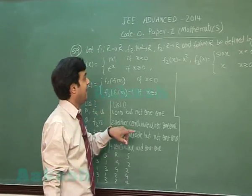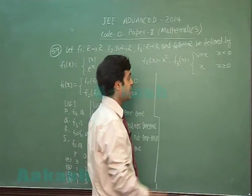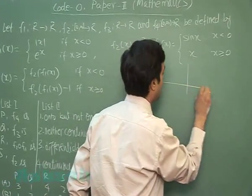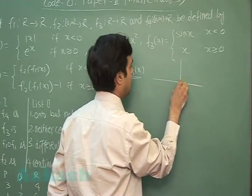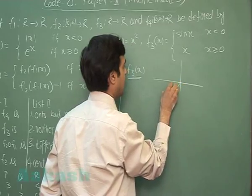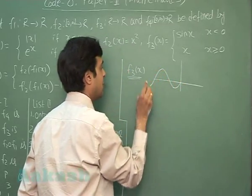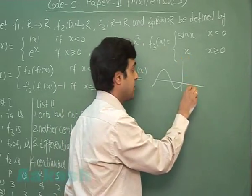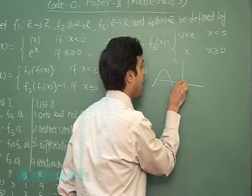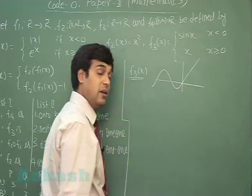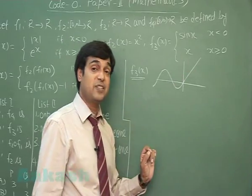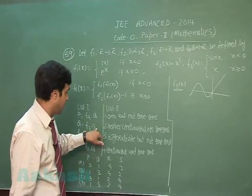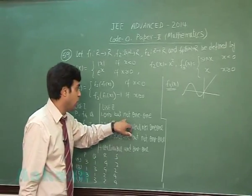Now f4 is a composite one. If I talk about f3 first, that is option Q. f3 is sin x and x, so f3(x) can be traced as sin x when x is less than 0. At x equals 0 this is also 0, so the continuity is there. And the line y equals x is like this one, so we can see this function is continuous as well as differentiable.